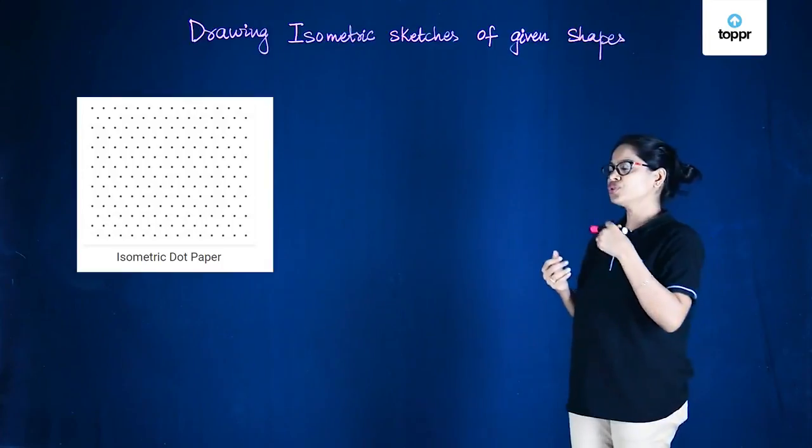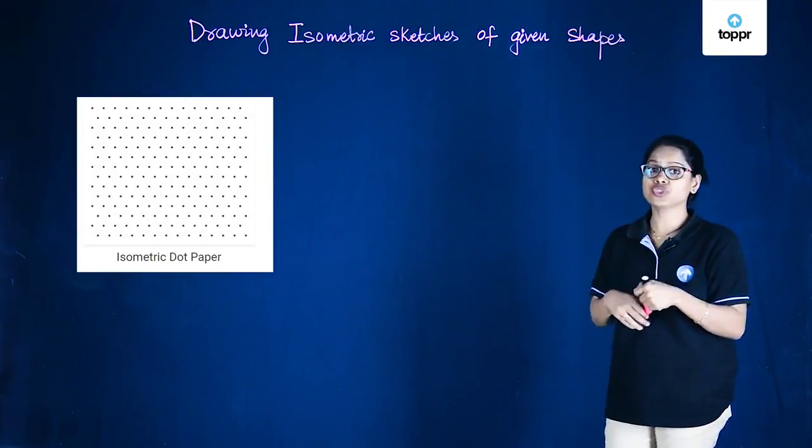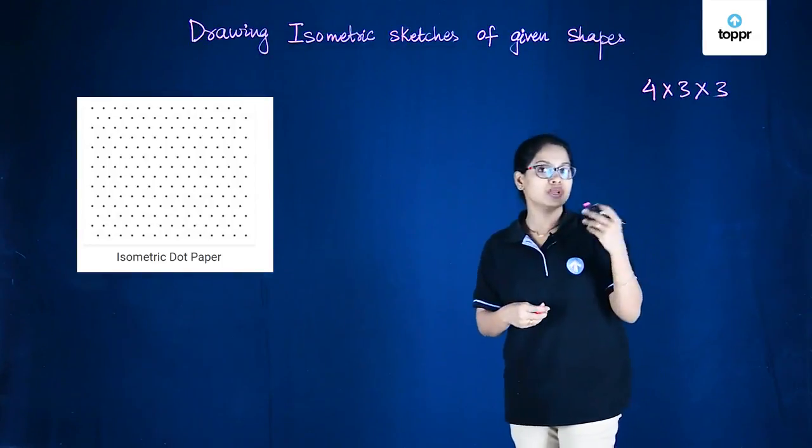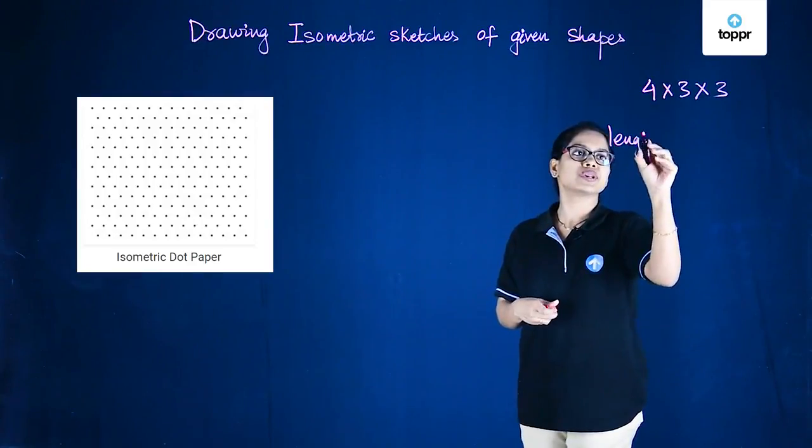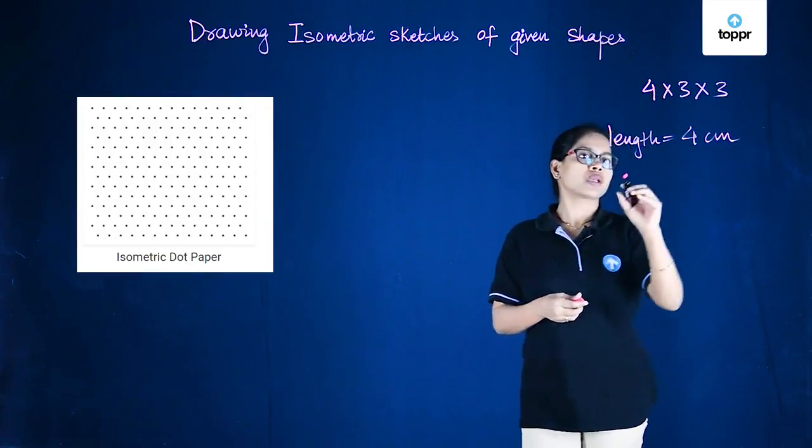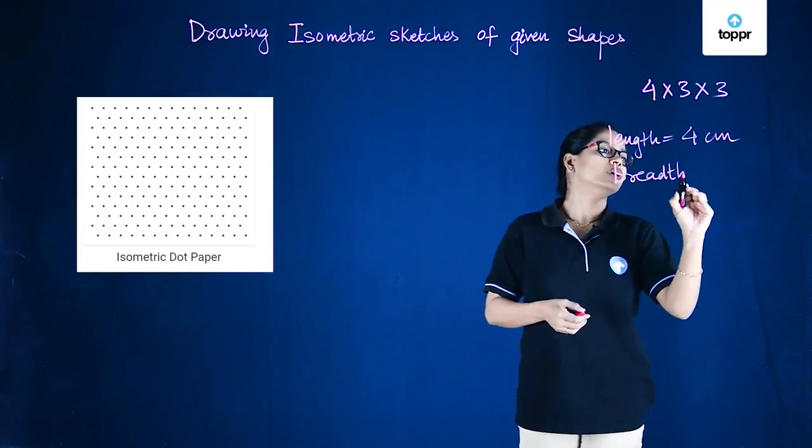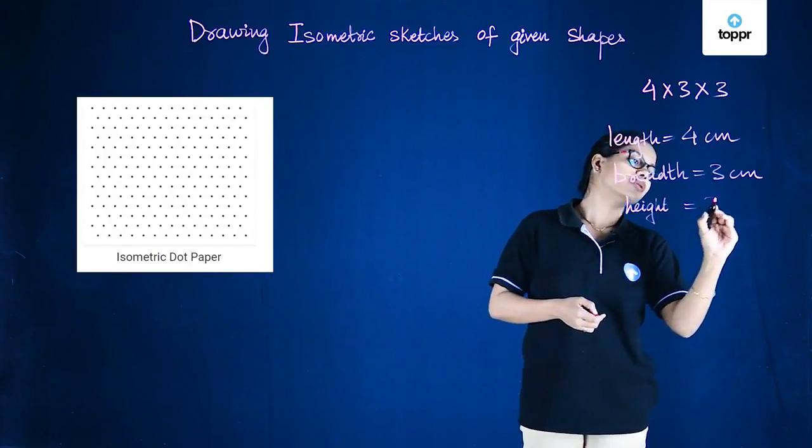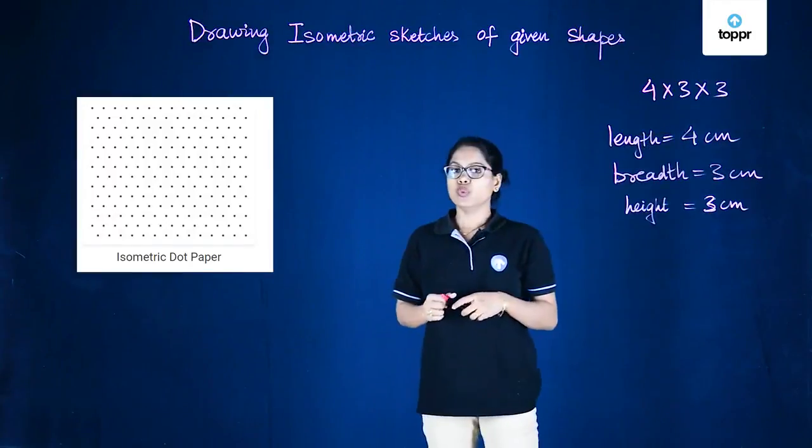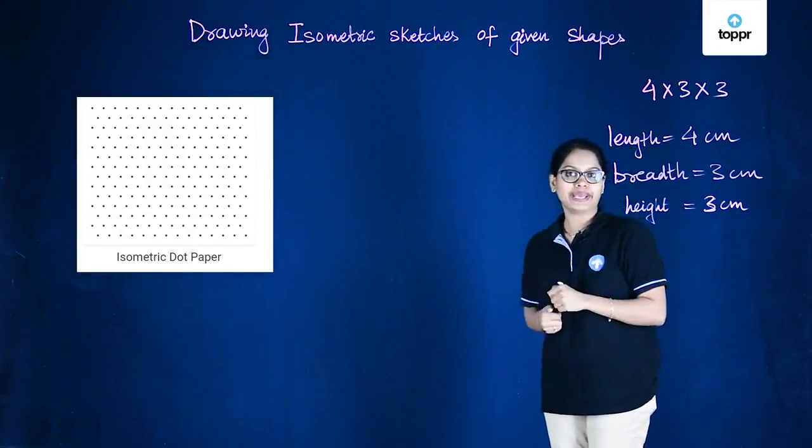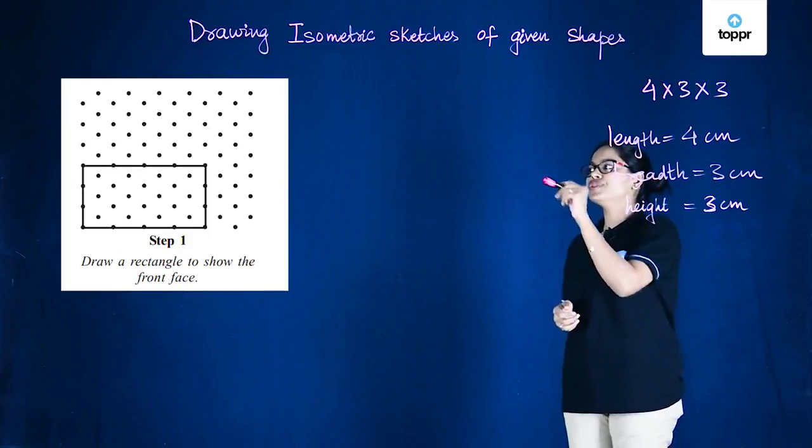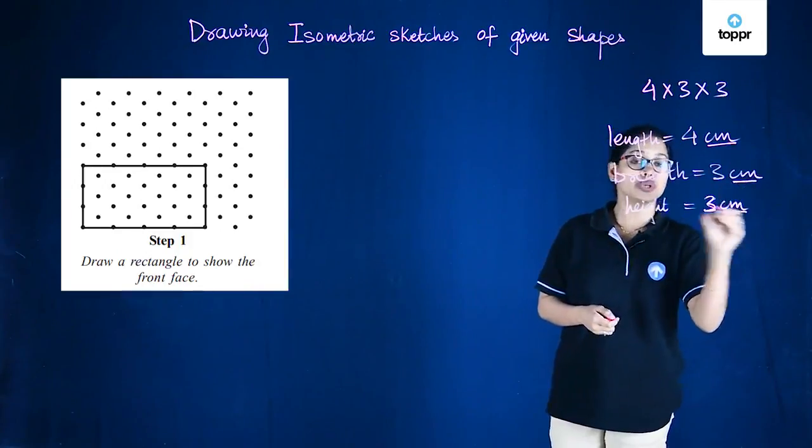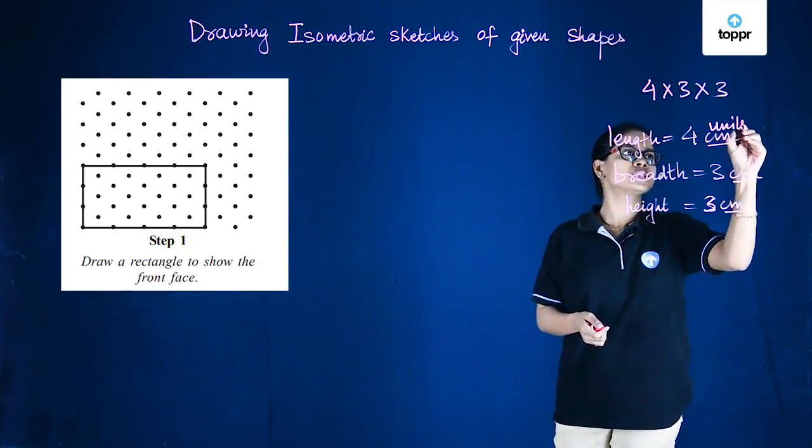So we are now going to try and draw an isometric sketch of a cuboid with dimensions 4 by 3 by 3. That means we'll be drawing a cuboid whose length is equal to 4 centimeters, breadth is equal to 3 centimeters and height is equal to 3 centimeters.